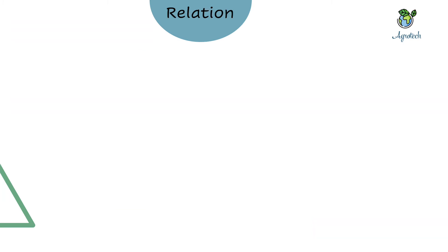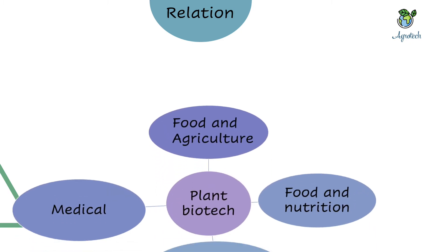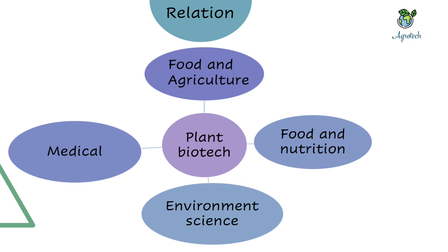Now, the relation of plant biotechnology with other sciences. Based on my understanding, four sciences are highly related. First is food and agriculture — plant biotechnology is definitely linked with agriculture to improve food production and productivity. Second is food and nutrition — plant biotechnology is helping to develop nutrient-rich crops, such as golden rice, so it is definitely related to food and nutrition.